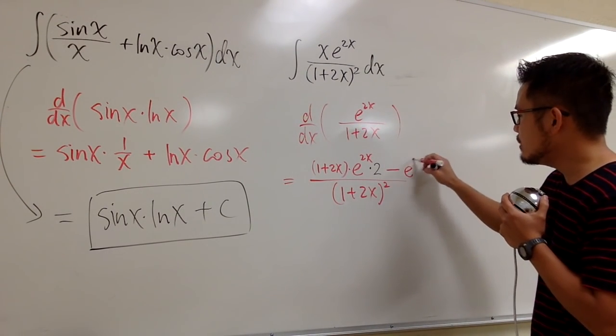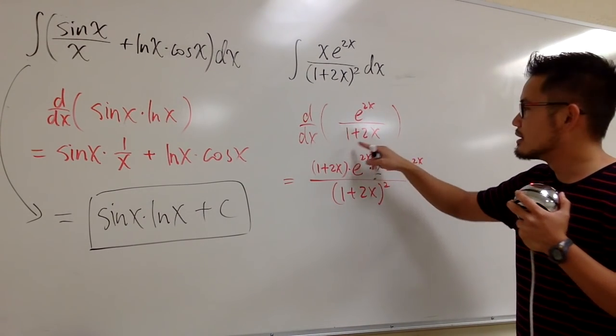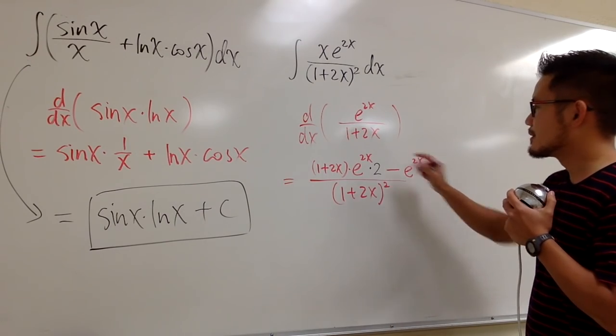And then we further subtract. We keep the top function, which is e to the 2x, and we multiply by the derivative of the bottom. The derivative of 1 is 0, the derivative of 2x is just 2, so we multiply by this 2. Found that.